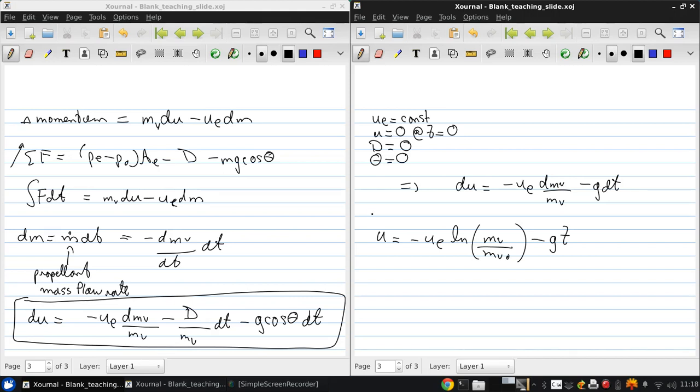So if we can rewrite this using the specific impulse as follows, g times the specific impulse times natural logarithm of mv naught over mv minus gt.